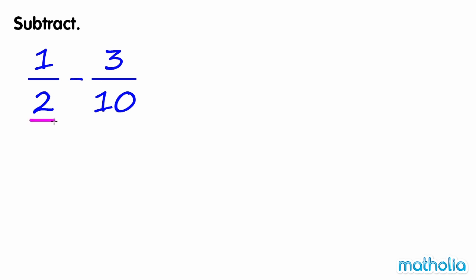Subtract. Find 1 half minus 3 tenths. The denominators of these fractions are not the same — they are unlike fractions.